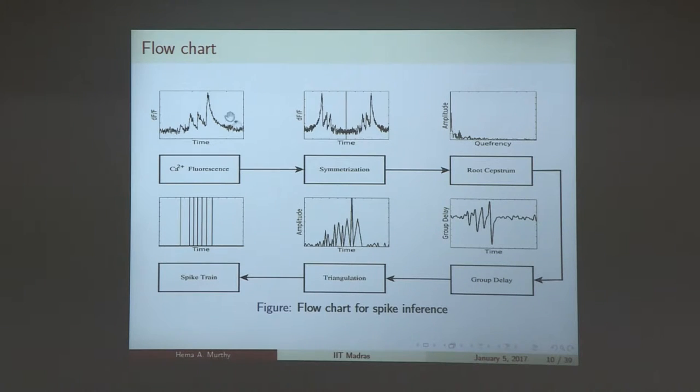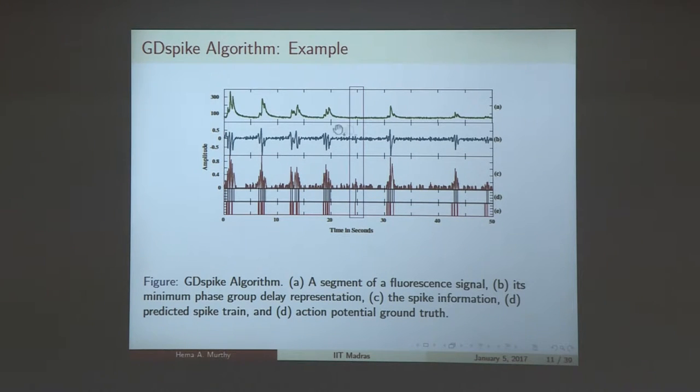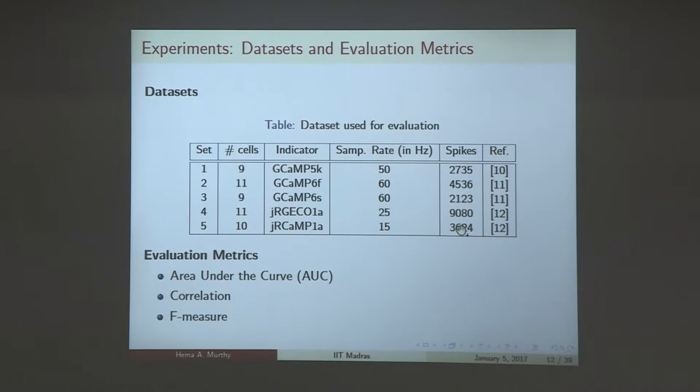This is the algorithm. This is the calcium fluorescence signal. We perform what is called symmetrization, so it becomes like a magnitude positive function. The calcium signal is a positive function. You symmetrize it, then it looks like a magnitude spectrum. Then you make the inverse Fourier transform, so you get a zero phase signal. Then you take the causal portion of it. Then you do what is called a root cepstrum analysis. Then you get the group delay of the causal portion of the signal. That is minimum phase, you can prove that. For minimum phase signals, group delay has this property of giving you high resolution. Then you get triangulation, and then you get the spike. This is the algorithm that we have developed. There's no machine learning in it. It just simply does pure signal processing. Here is the calcium signal. This is the group delay. This is the triangulation. This is the inferred predicted spike train. And this is the actual ground truth. We seem to be performing reasonably well.